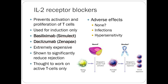IL-2 receptor blockers prevent activation and proliferation of T-cells and are used for induction only — not maintenance therapy. These monoclonal antibodies are very expensive but significantly reduce rejection rates when used for induction. They work on active T-cells only, essentially stunning the immune system prior to transplantation. Adverse effects are minimal beyond the intended immunosuppression, though as biologic agents they carry higher risk of hypersensitivity reactions than small-molecule oral drugs.